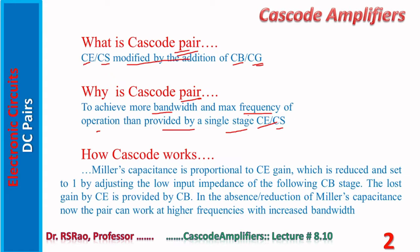How does cascode work? Miller's capacitance is proportional to CE gain. It requires mention here that CE configuration only suffers with Miller's capacitance. Other configurations — CB or CC — do not suffer. When it comes to the FET version, only CS suffers with the issue of Miller's capacitance. CD or CG configurations do not have this problem.